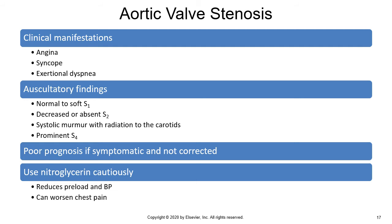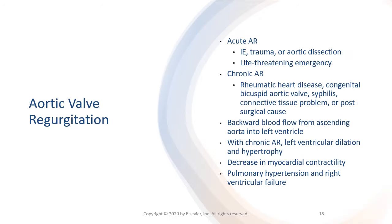Some people may be asymptomatic. The prognosis is poor for patients with symptoms and those whose valve obstruction is not fixed. Nitroglycerin is used cautiously to treat angina, as it can lower blood pressure and worsen chest pain.